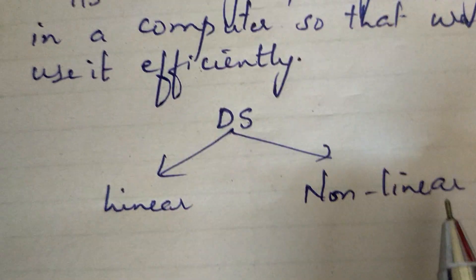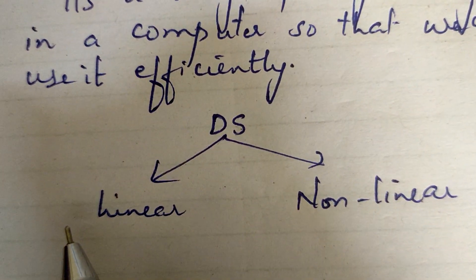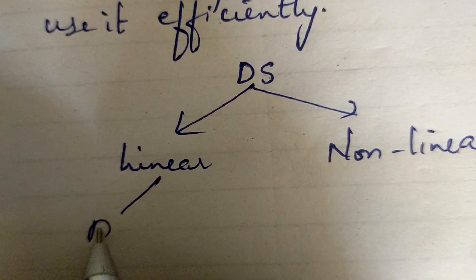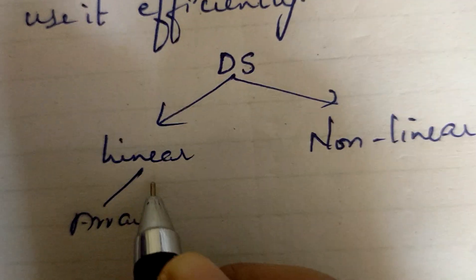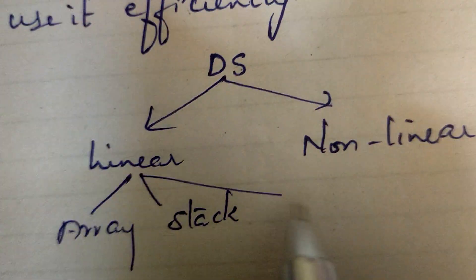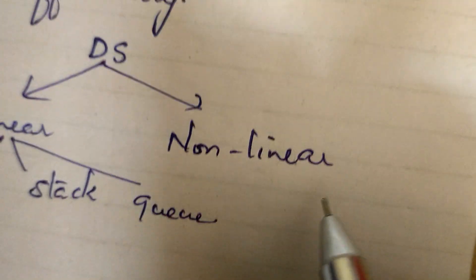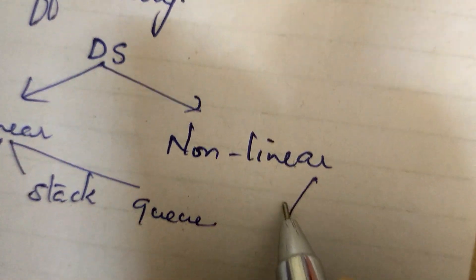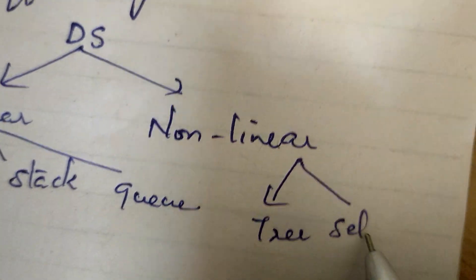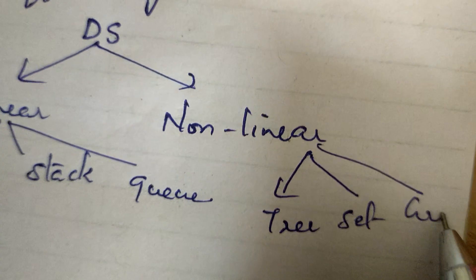Non-linear data structure is different from linear data structure. Examples of linear data structure include array, stack, and queue. For non-linear data structure, we have tree, set, and graph data structures.